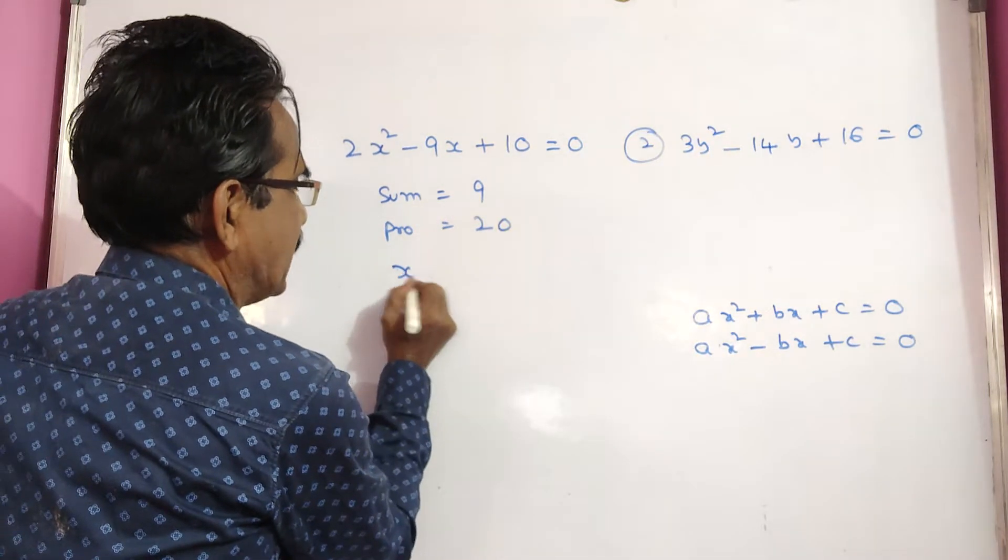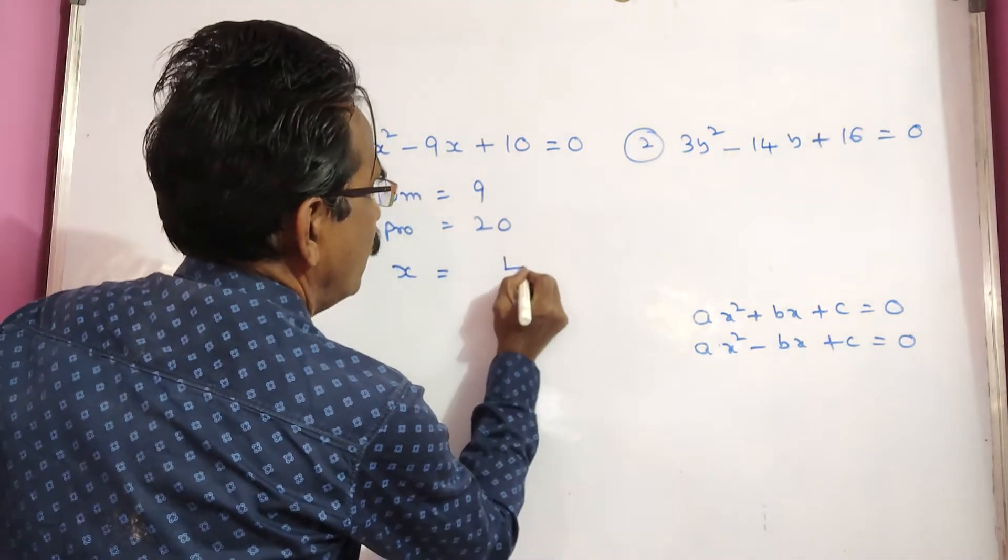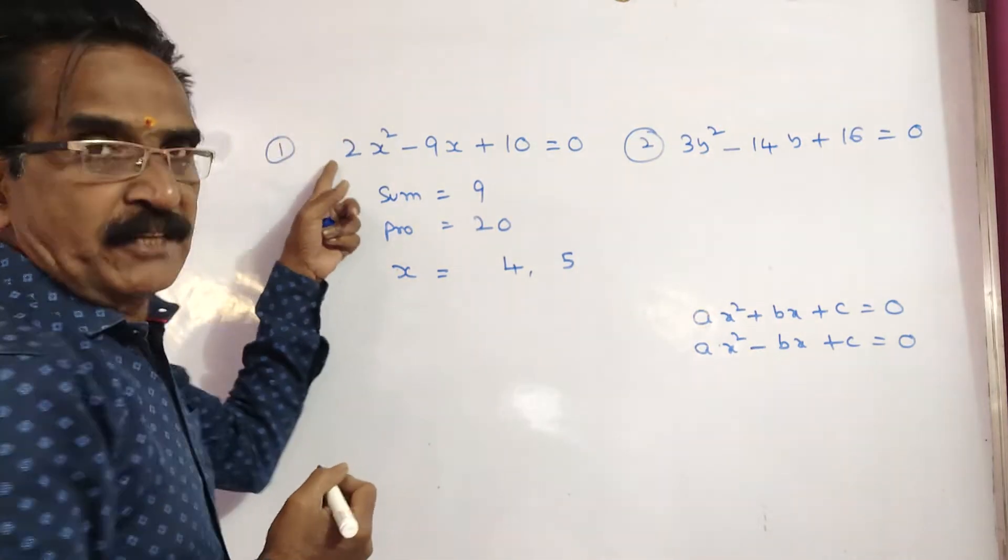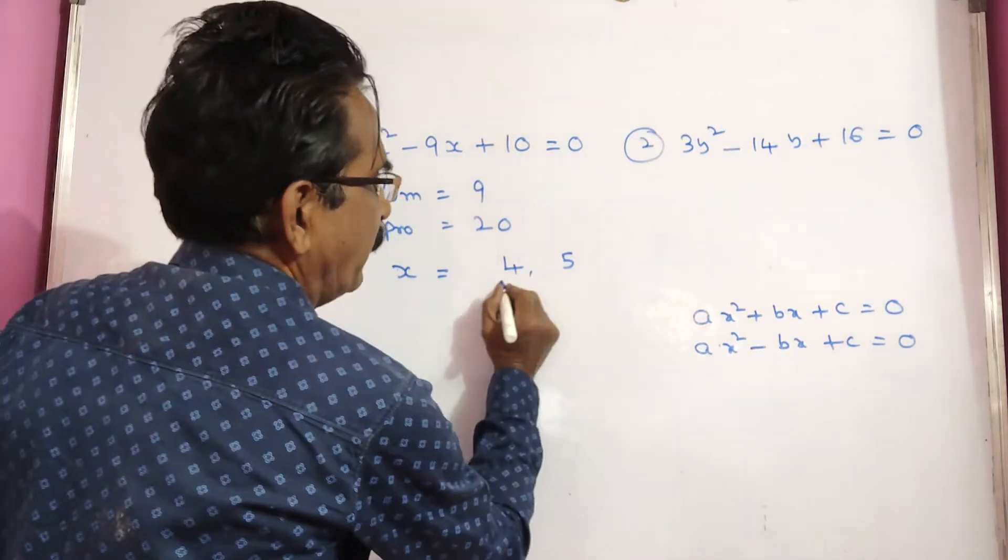So numerical values of x are 4, 5, then you have to divide by 2 in the coefficient of x square.